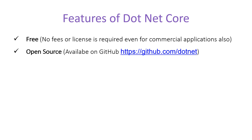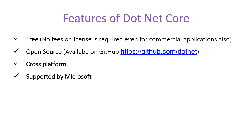Since .NET Core is an open source framework, you can also contribute to the development and maintenance of .NET Core. You can open the repository link in your browser, work on the code, and create a pull request. .NET Core is cross-platform, meaning we can develop and run applications on multiple operating systems — Mac, Windows, Linux, and Docker. Most importantly, .NET Core is supported by Microsoft. So the main features are: it is free, open source, cross-platform, and supported by Microsoft.